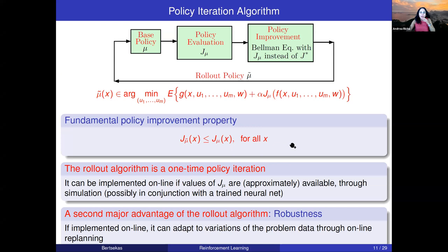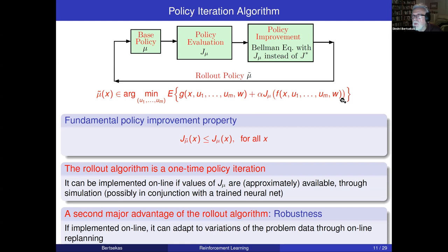Question: In the formula defining mu tilde, you're taking an expectation — expectation over what? The expectation is over W. W is a random variable with a given distribution. In some cases you can calculate this expectation exactly; in other cases you need to use a simulator or computer model to implement this randomness.